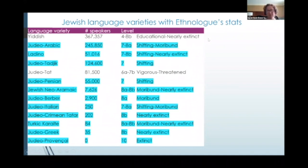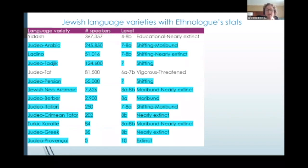You might notice that there isn't just one number for some languages — there are multiple numbers, because the statistics are given by country. In some countries these languages would be considered endangered, but in others they would not. So Yiddish is not endangered in America, Belgium, or Israel, but it is considered endangered in Lithuania and Belarus. And Judeo-Tat or Juhuri is considered vigorous in one town in Azerbaijan called Kirmizi Kasaba, but is considered threatened elsewhere in Azerbaijan, Dagestan, Russia, and in Israel where many of the speakers moved.